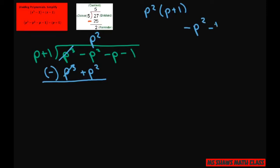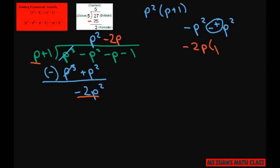When you subtract, these cancel and you have negative p squared minus a positive p squared, so you get negative 2p squared. The next step: what times p gives me negative 2p squared? That's going to be minus 2p. Multiply negative 2p times p plus 1 and bring down the negative p — that gives you negative 2p squared minus 2p.